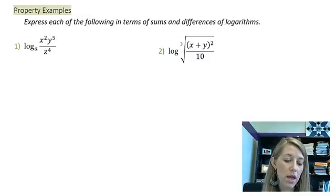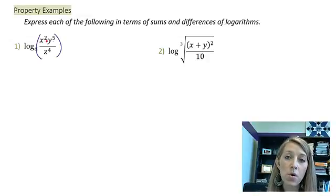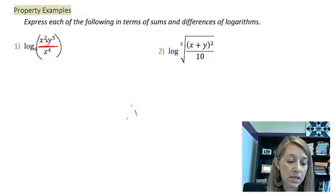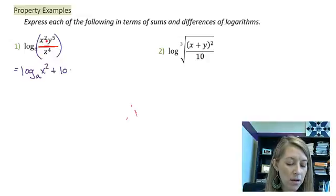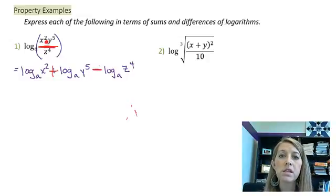So in the first one, log base a of x squared y to the fifth over z to the fourth, I see that I have a product on top. So that's going to use the product property where it becomes addition. And then I have a division on the bottom, so that's going to use the quotient property where I have subtraction. If I just separate out those things, that gives me log base a of x squared plus log base a of y to the fifth minus log base a of z to the fourth. Wherever I had a multiplication, that changed into addition, and wherever I had a division, that changed into subtraction.